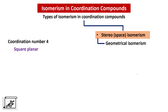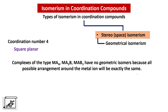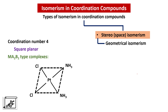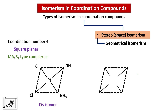Let us study square planar complexes for geometrical isomerism. We must remember that complexes of the type MA4, MA3B, or MAB3 have no geometrical isomers because all possible arrangements around the metal ion are exactly the same. Let us start from MA2B2 type complexes where two ligands are same and two are different. The square planar geometry is generally exhibited by platinum and palladium complexes. When two chlorine atoms are adjacent to each other, the isomer is called cis. When the two chlorine atoms are opposite to each other, this isomer is called trans. This cis-trans isomerism is the type of geometrical isomerism.